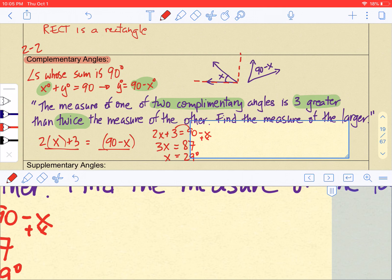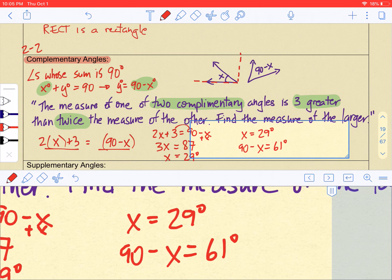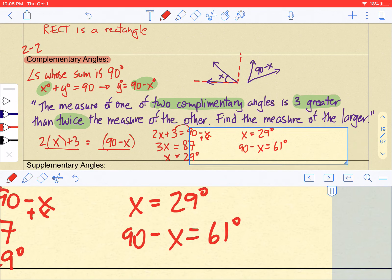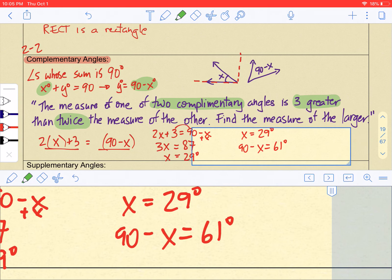And we get 29 degrees. So one angle is 29. So x is 29 degrees. And then 90 minus x is going to be 61 degrees. So in this case, they said find the measure of the larger. We're after this one.